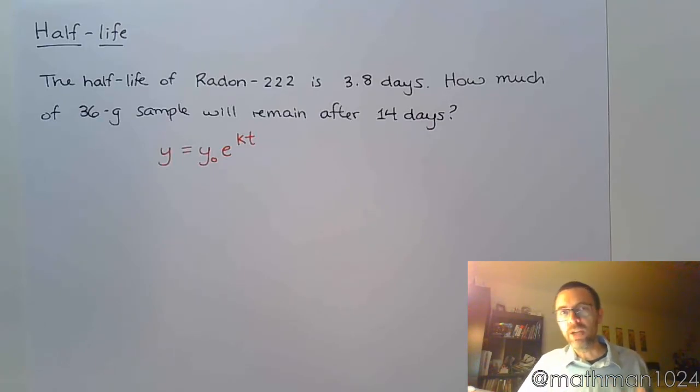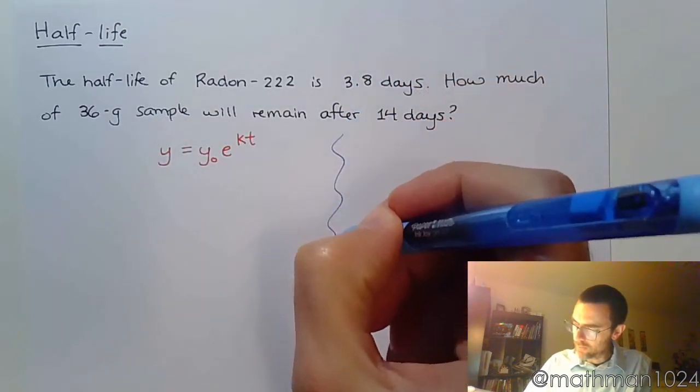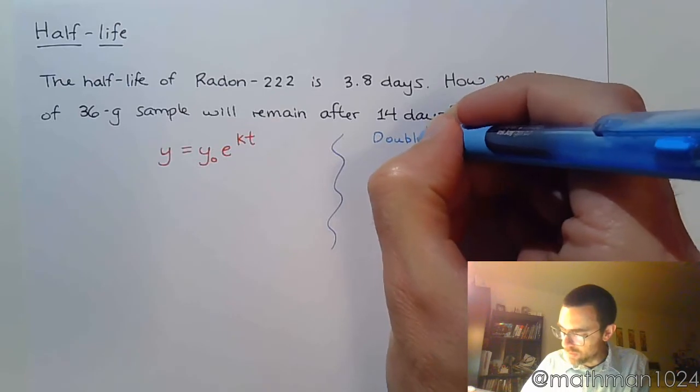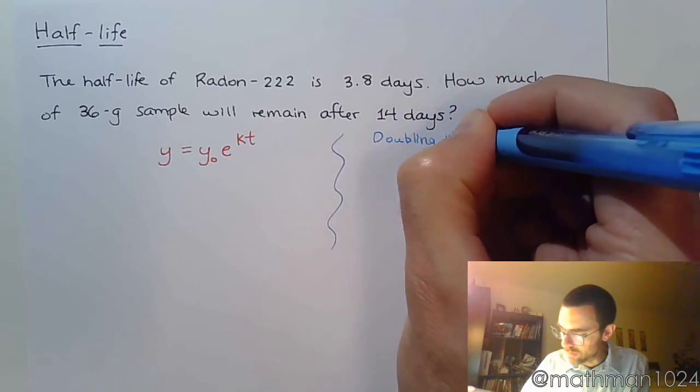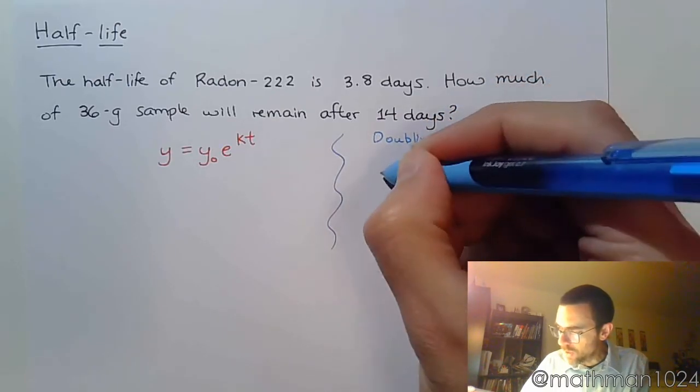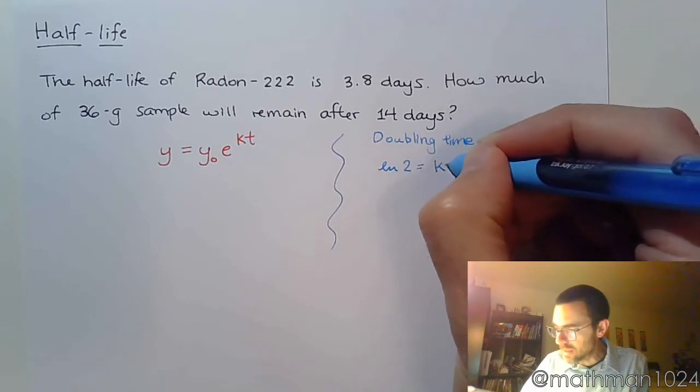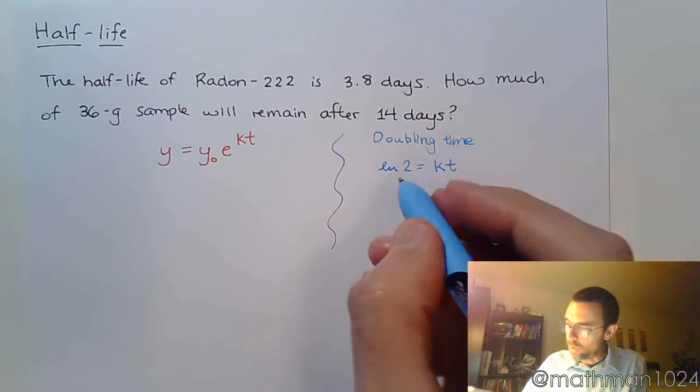So if you remember in the last video, if we wanted to find doubling time, we would look at something like this. For doubling time, we would say that the natural log of 2 was k times t.